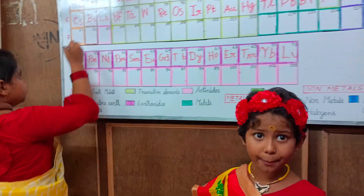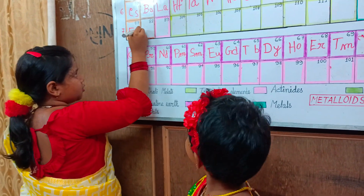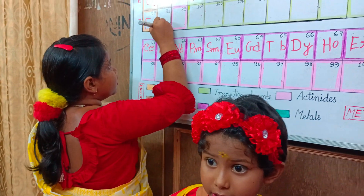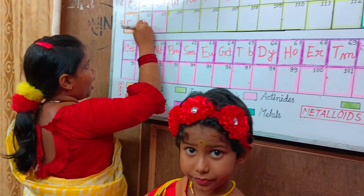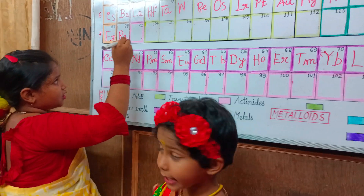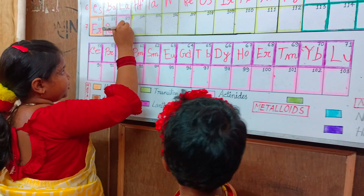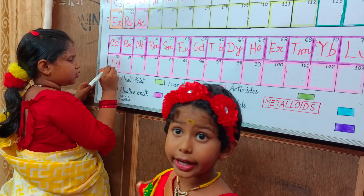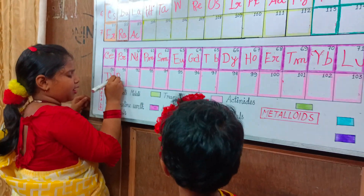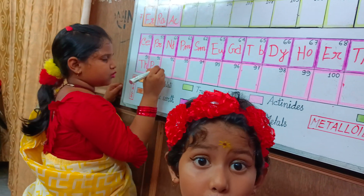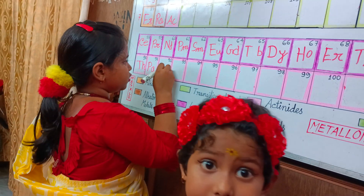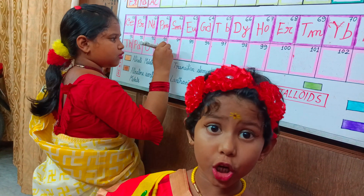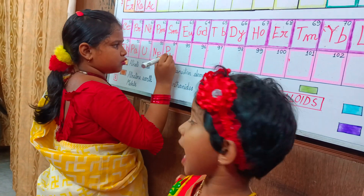87 francium, Fr. 88 radium, Ra. 89 actinium, Ac. 90 thorium, Th. 91 protactinium, Pa. 92 uranium, U. 93 neptunium, Np. 94 plutonium, Pu. 95 americium, Am.